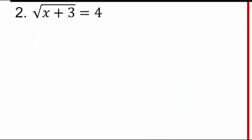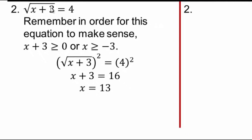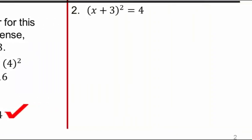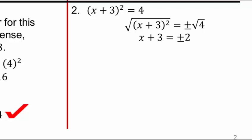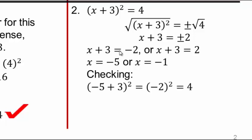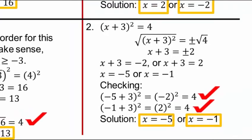For square root of (x+3) equals 4: x plus 3 must be greater than or equal to 0, so x must be greater than or equal to negative 3. Square both sides and solve for x. For (x+3) squared equals 4: take square root of both sides with plus or minus, so x plus 3 equals 2 or x plus 3 equals negative 2, giving x equals negative 1 or x equals negative 5. Check: negative 5 plus 3 is negative 2, and negative 2 squared is 4. Check: negative 1 plus 3 is 2, and 2 squared is also 4. Both solutions check out.